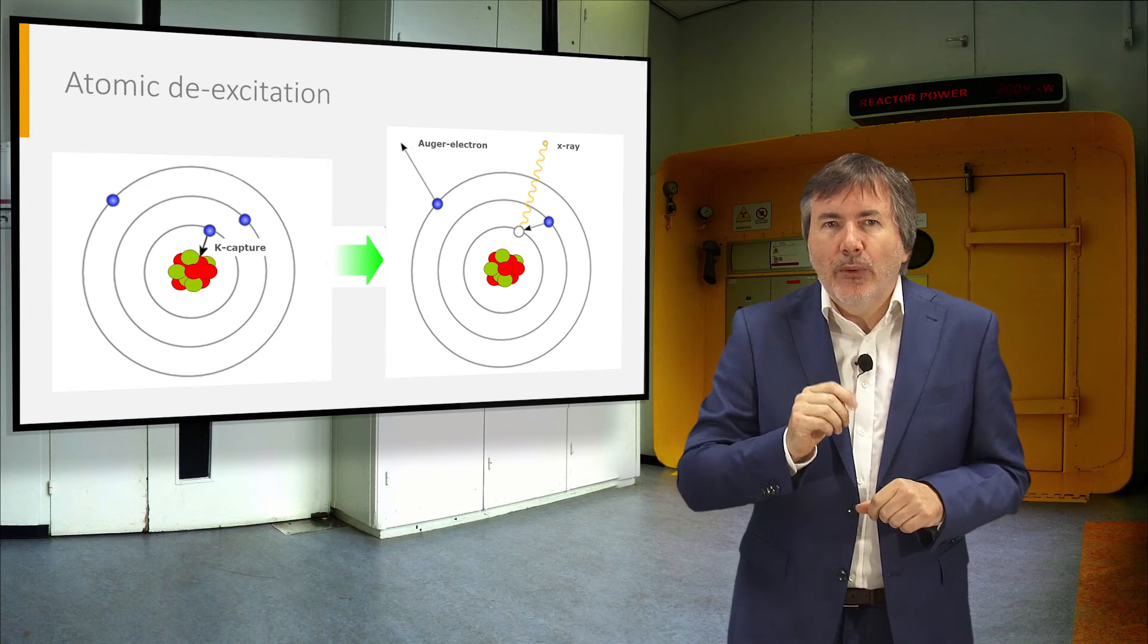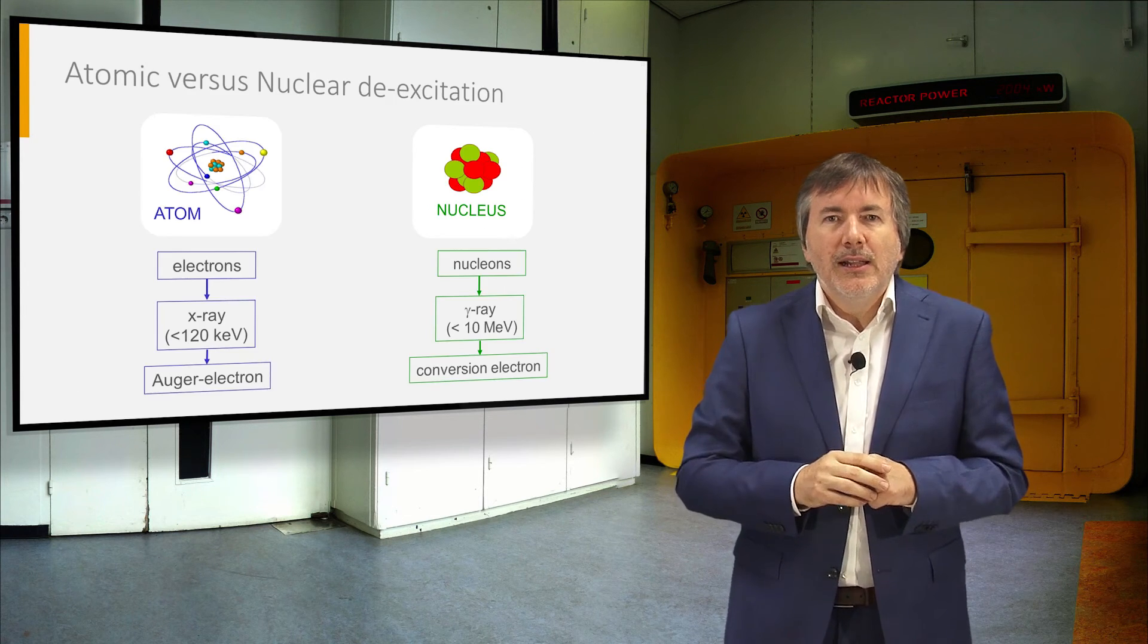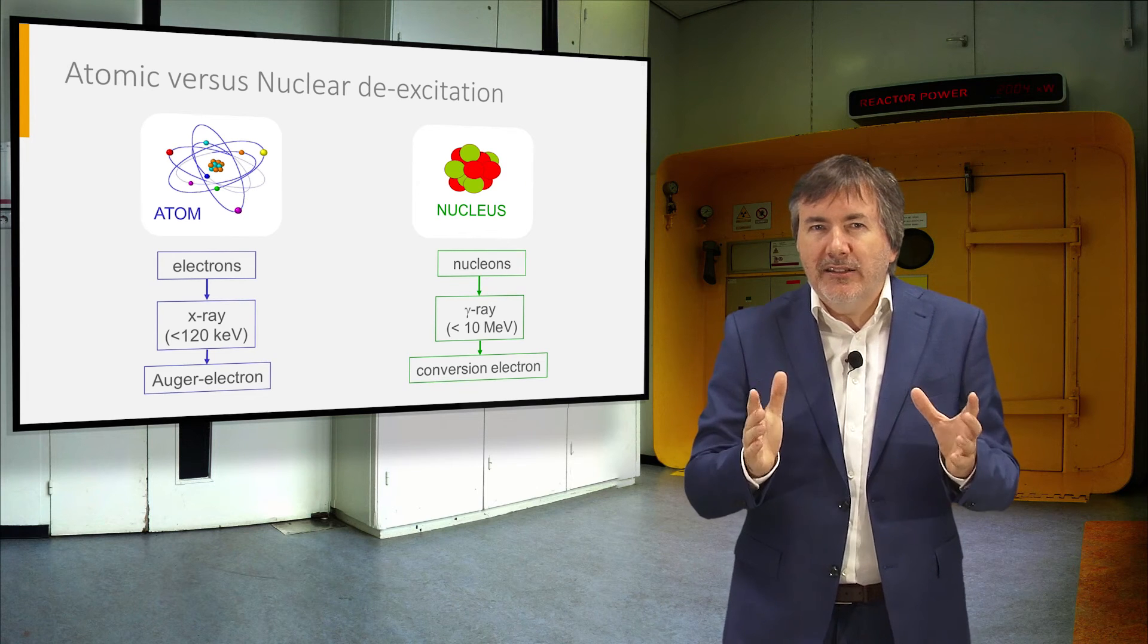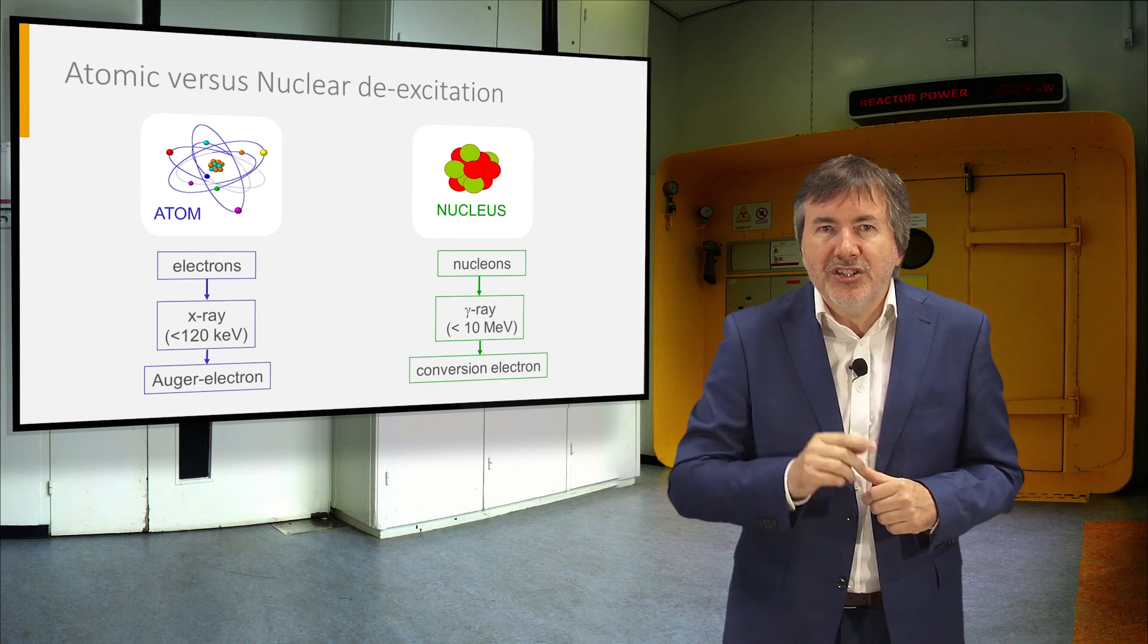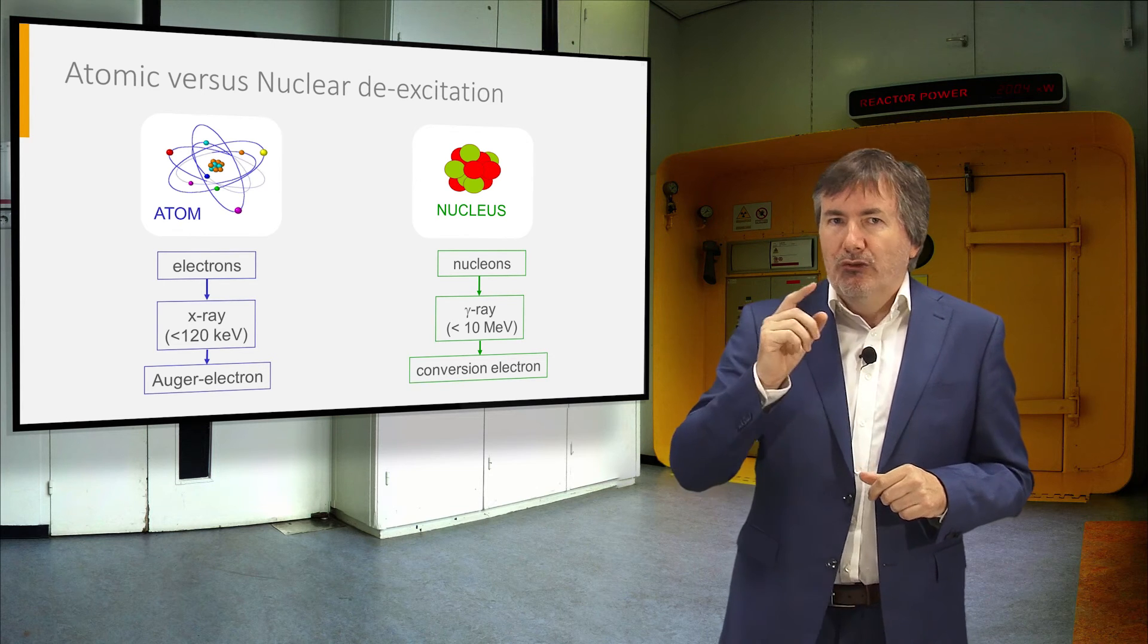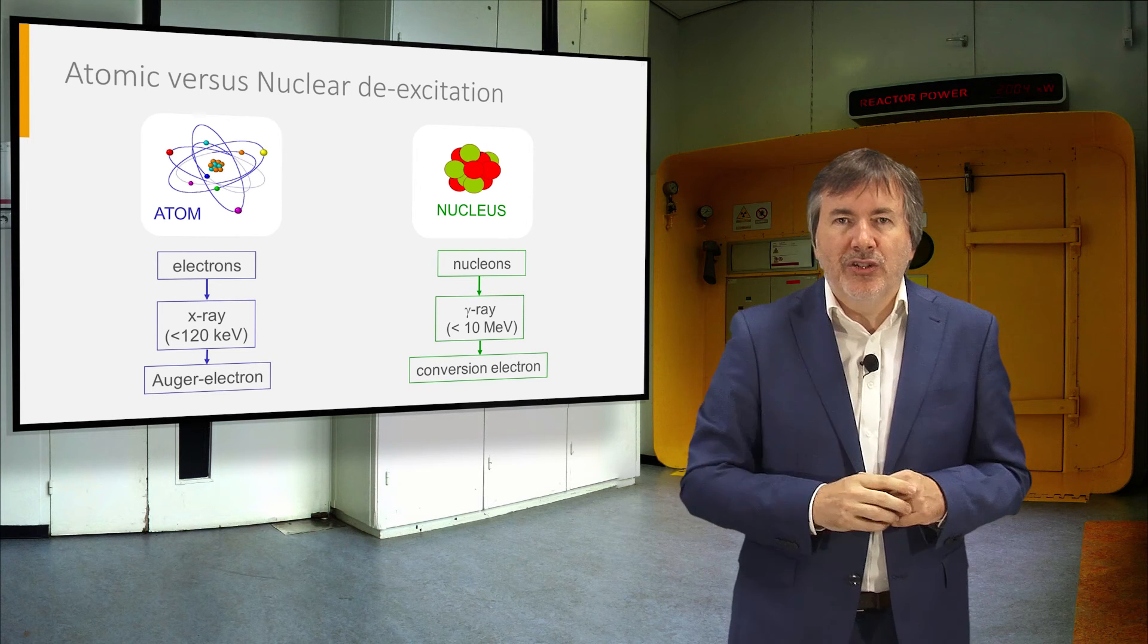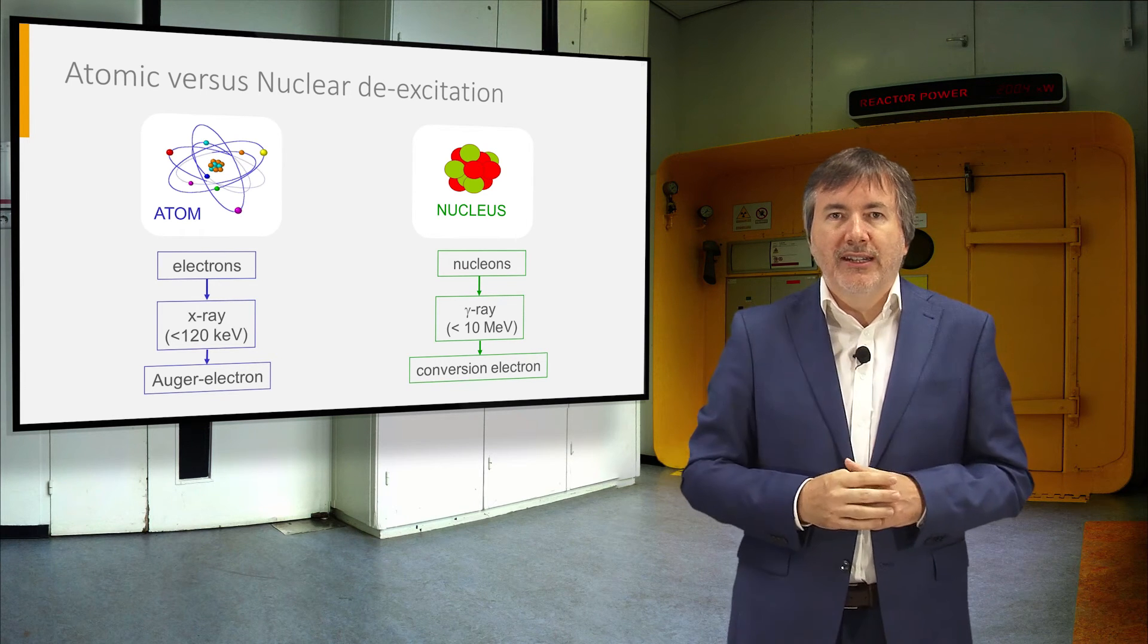Notice how atoms and nuclei de-excite in similar ways. When electrons rearrange in atoms, the keV excitation energy is taken away by X-rays or Auger electrons. When nucleons rearrange, gamma rays in the MeV range are emitted, or conversion electrons.